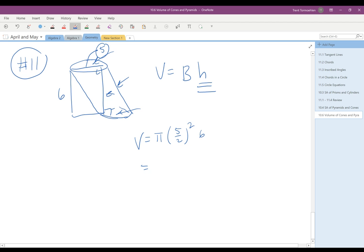And that gets us 25 pi times 6 over 4, which is 150 pi over 4, which is the same as 37.5 pi. And so the volume of this is 37.5 meters cubed. It also said to make sure you write it as a rounded to the nearest tenth. And so that would be 117.8.